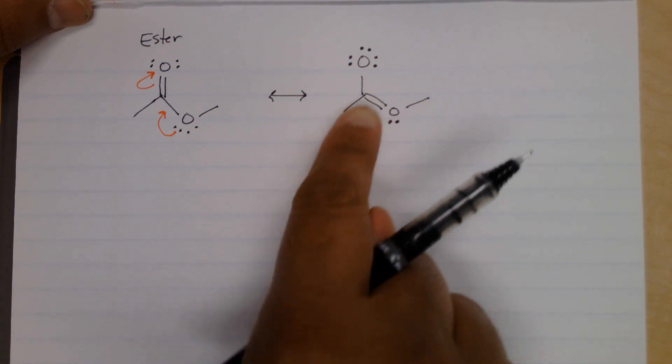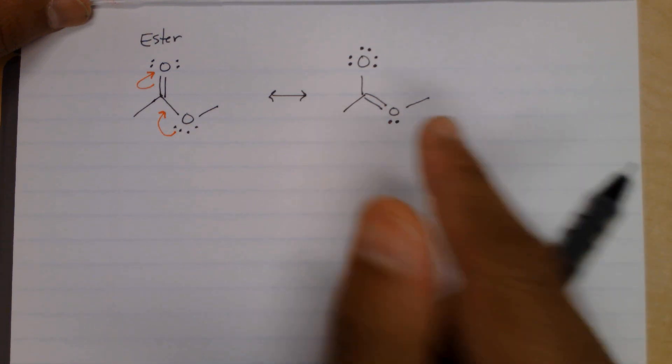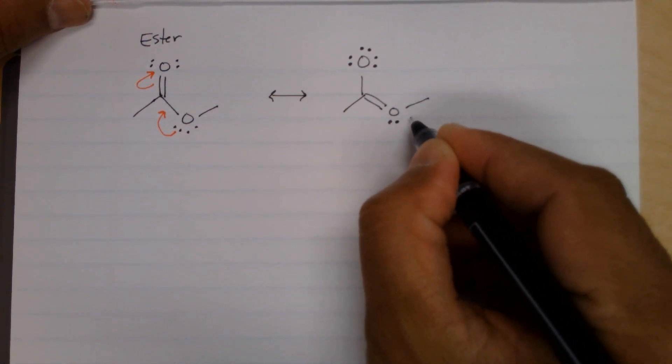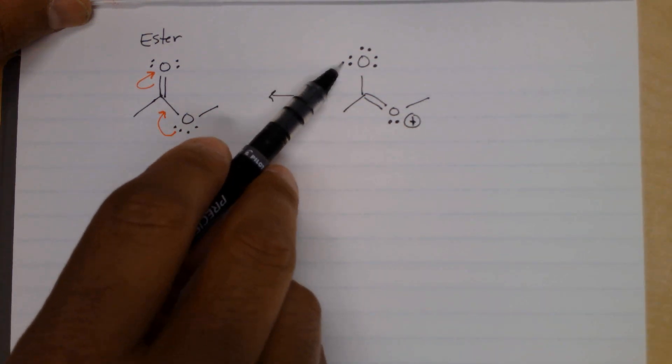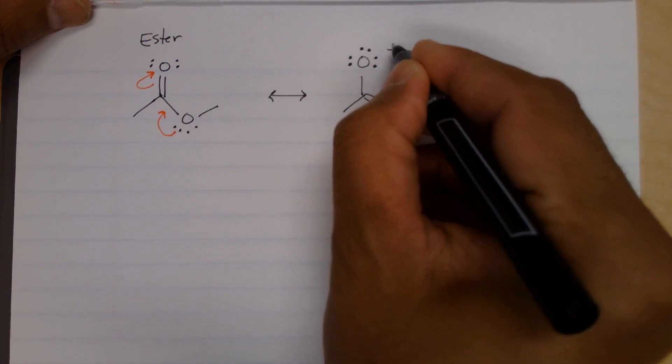Look at your notes and understand these trends. Oxygen with three bonds and a lone pair is a positive formal charge. Oxygen here with one bond and three lone pairs is negative.